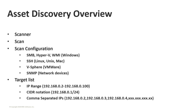The second component is the scan configuration, wherein we'll be specifying different protocols to scan against, such as SMB, Hyper-V, and WMI for Windows; SSH for Linux, Unix, and Mac devices; vSphere for VMware ESXi; SNMP for network devices such as routers, switches, or printers. The target list specifies the IP range in CIDR notation, which will be broken down into individual IP addresses, or you could assign comma-separated IP addresses with no spaces.